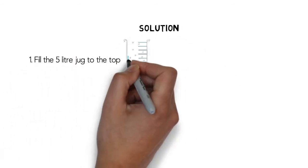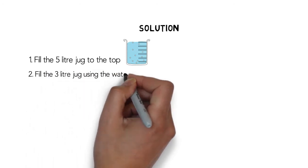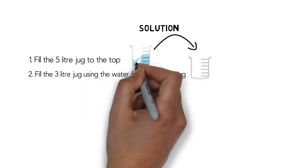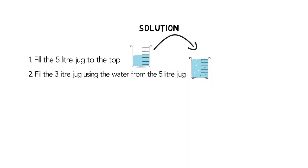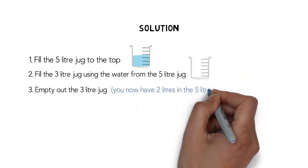Fill the 5 litre jug to the top. Fill the 3 litre jug using the water from the 5 litre jug. The third step is to empty out the 3 litre jug, leaving you with 2 litres in the 5 litre jug.